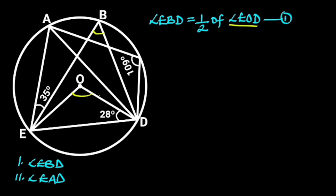From the figure, OD is equal to OE — reason: radii of the circle. Hence, triangle ODE is isosceles, and angle OED must be equal to angle ODE, which is 28 degrees.